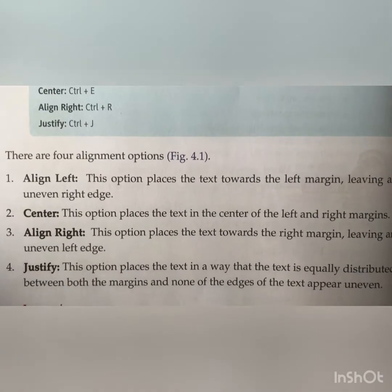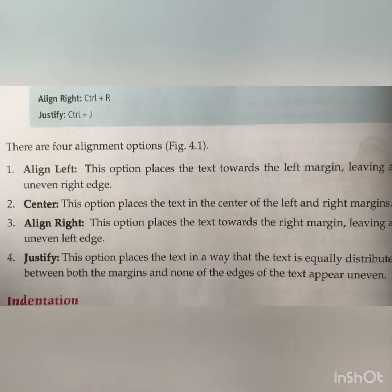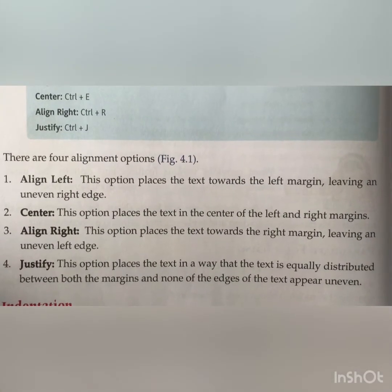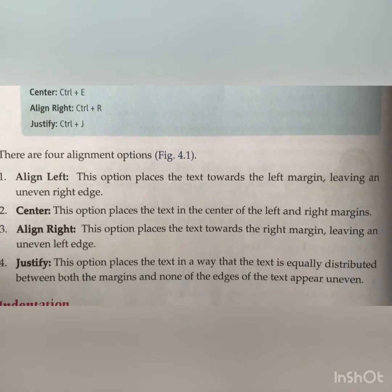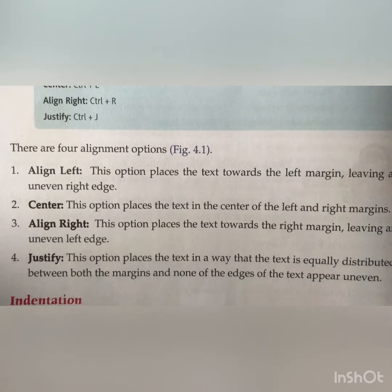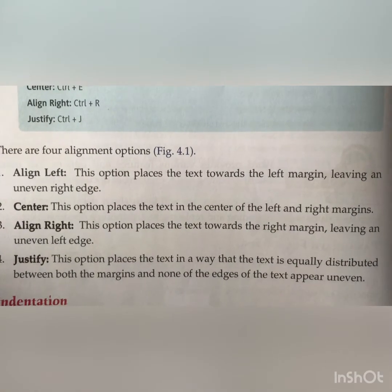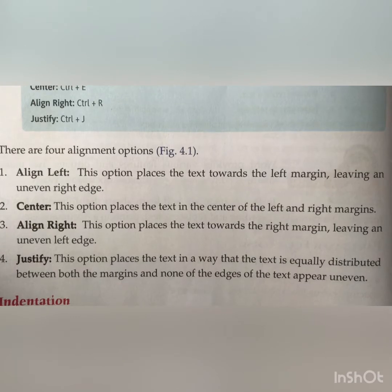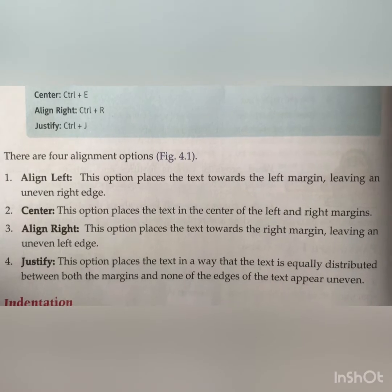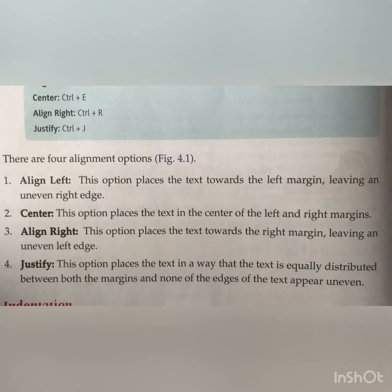Align left, center, align right, and justify — as shown on my laptop screen. Align left places the text towards the left margin. Center places the text in the center. Align right places the text towards the right margin. Justify distributes the text equally between both margins so that none of the edges appear uneven — meaning both sides of the page are equally distributed.